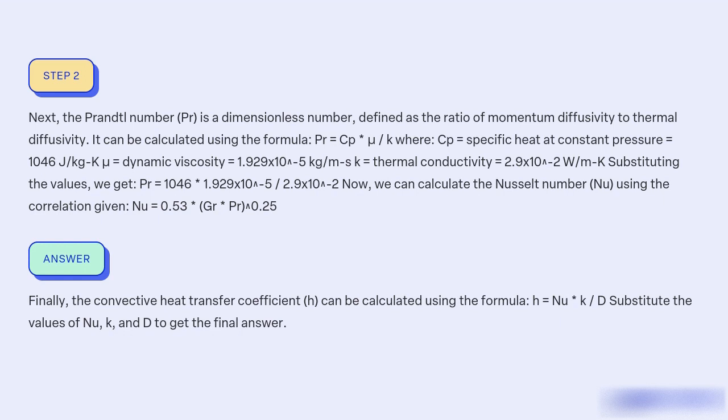Finally, the convective heat transfer coefficient (h) can be calculated using the formula h = Nu × k / D. Substitute the values of Nu, k, and D to get the final answer.